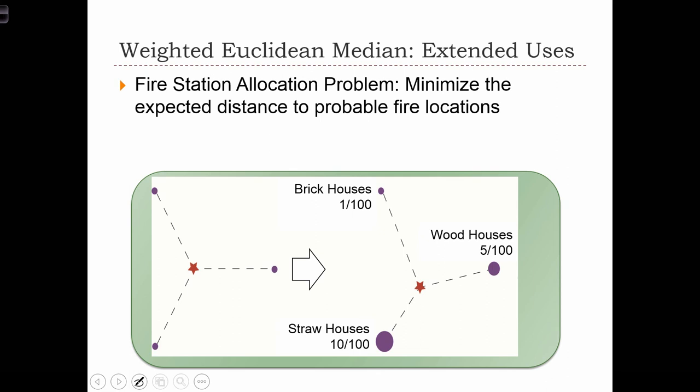Suppose we have three neighborhoods: one that contains brick houses, one that contains wood houses, and one that contains straw houses. If we were to locate the fire station in the middle of these three neighborhoods using just the mean center, we would find that the optimal fire station location is right in the center of these three points.